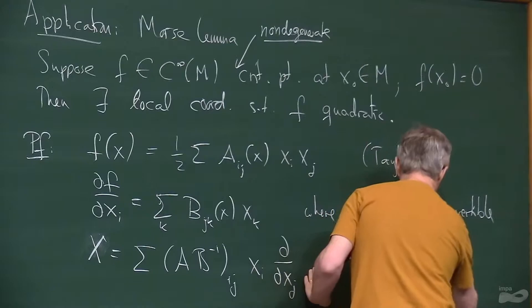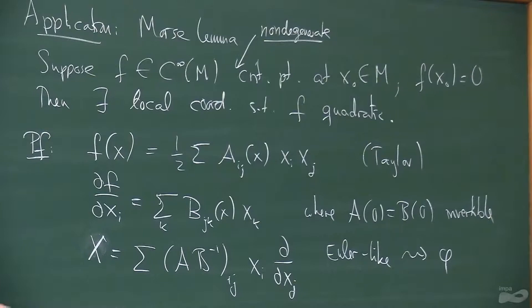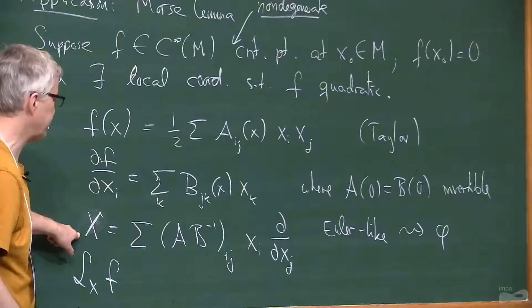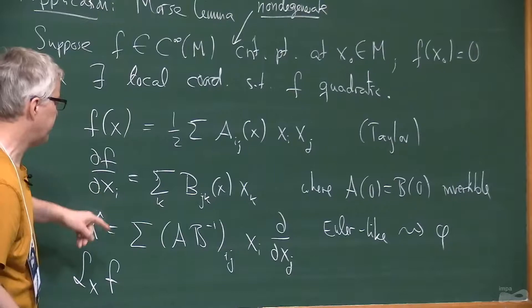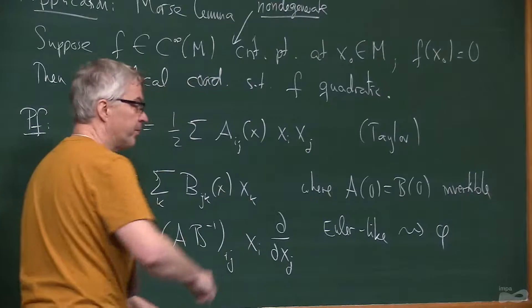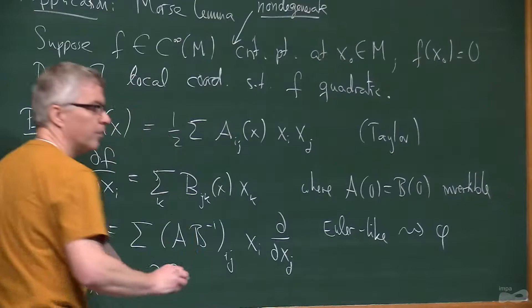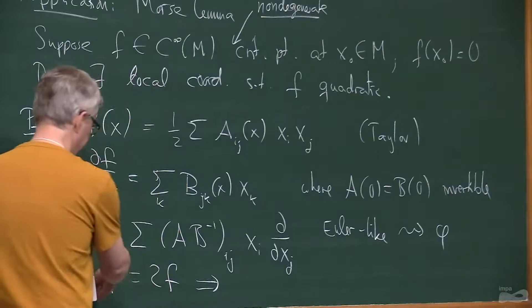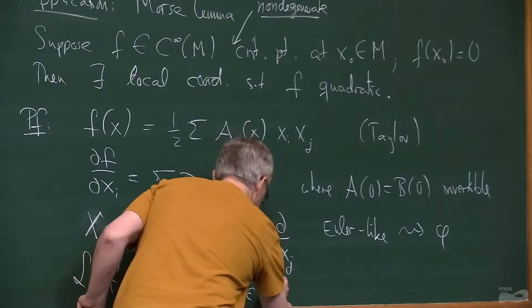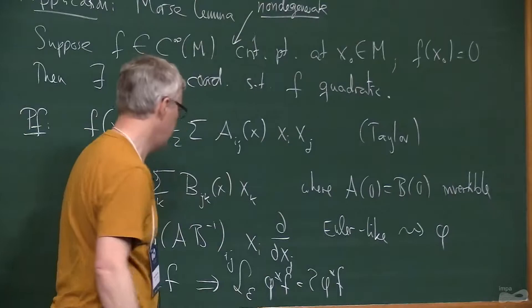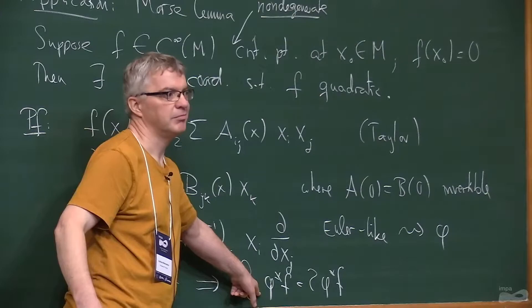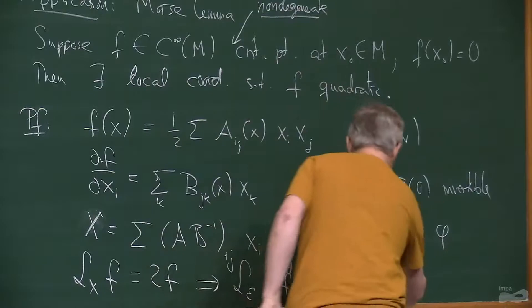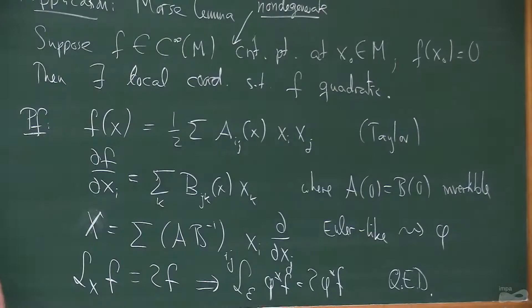So you get the diffeomorphism phi from the theorem. The way things are set up, if you take the Lie derivative of the function f with respect to this vector field X, the b's cancel and you get that this equals twice f. Now you pull this identity back under the diffeomorphism phi. Then phi pullback of X is the Euler vector field, so you get the derivative of E of phi pullback f equals twice phi pullback f. This identity tells you that phi pullback f is homogeneous of degree 2 — it's quadratic. So it's QED. That's a super easy proof of Morse lemma.